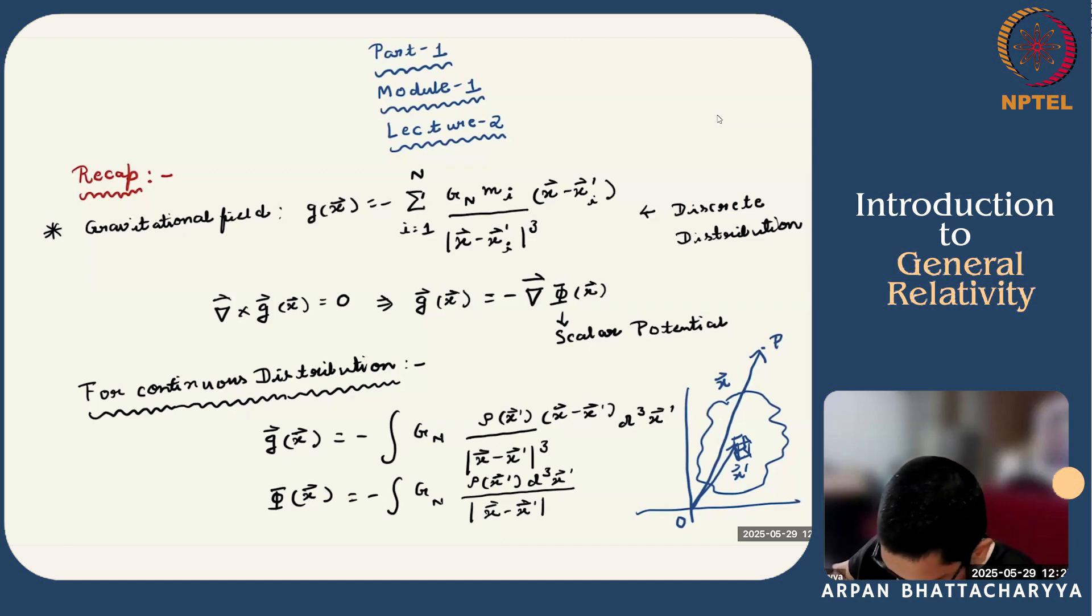First, we have introduced Newton's gravitational field g at a point x for n number of point particles. Xi primes are the position vectors of the individual point particles. Mi's are the gravitational mass or charge possessed by each point. This is a conservative field, so we can write g as a gradient of a scalar potential.